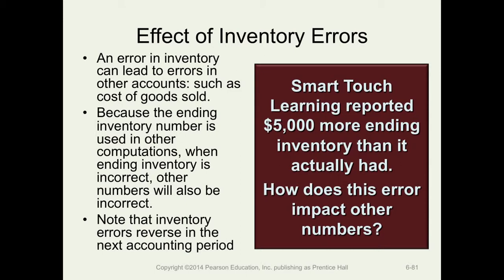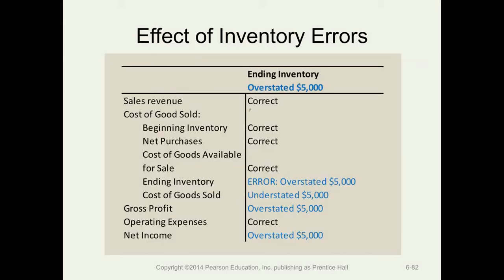For example, SmartTouch has $5,000 more in its ending inventory. If you overstate ending inventory, then you understate cost of goods sold and overstate gross profit and net income. This is very clear if you go back to the accounting equation: if you overstate an asset, which is inventory in this case, you have to overstate equity, which is due to higher net income.